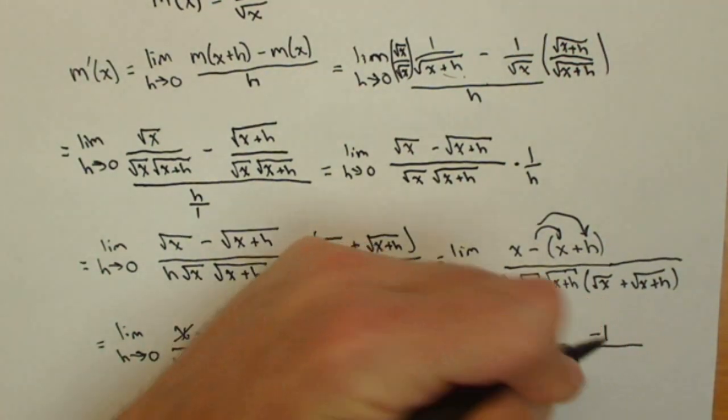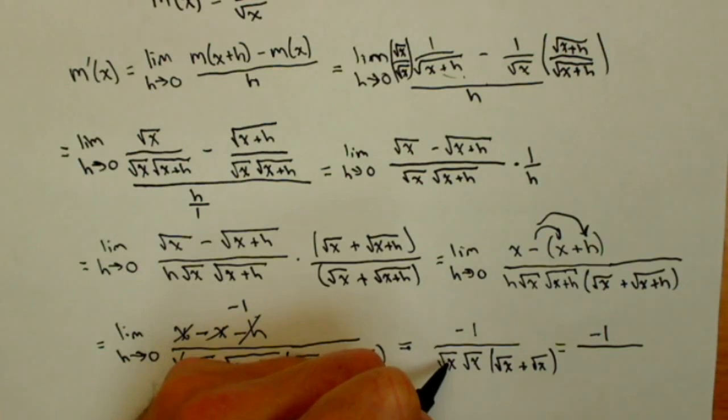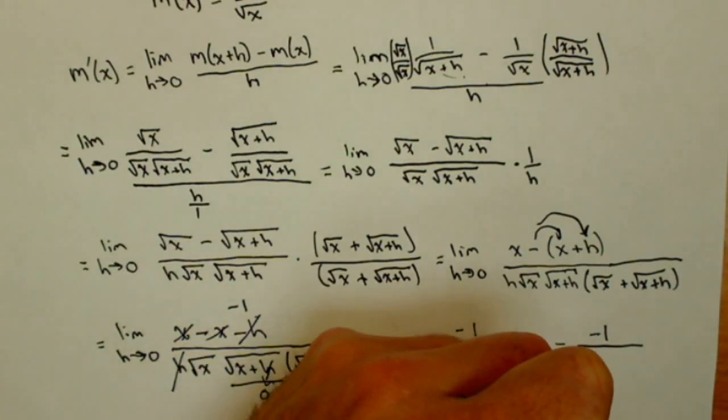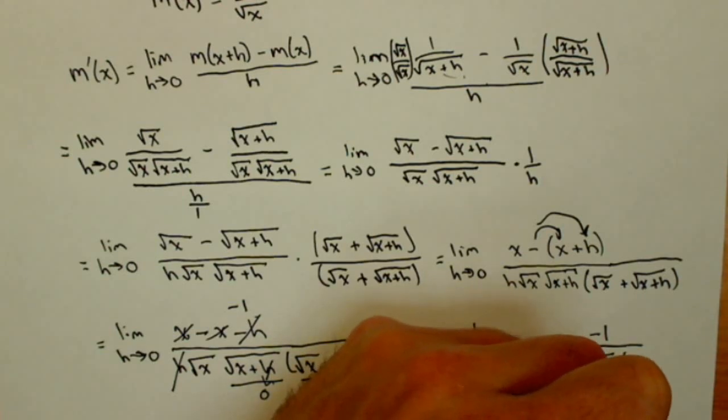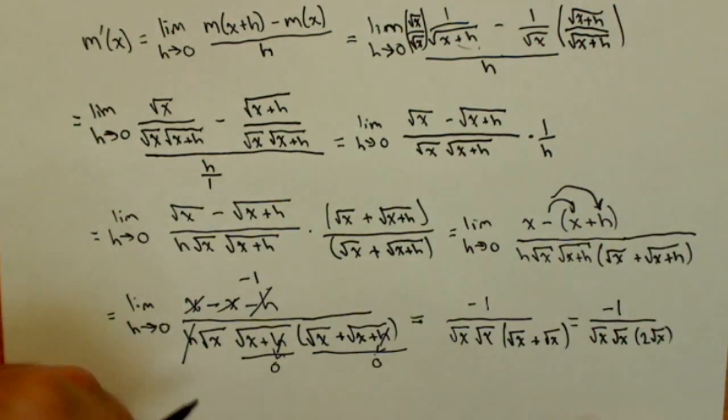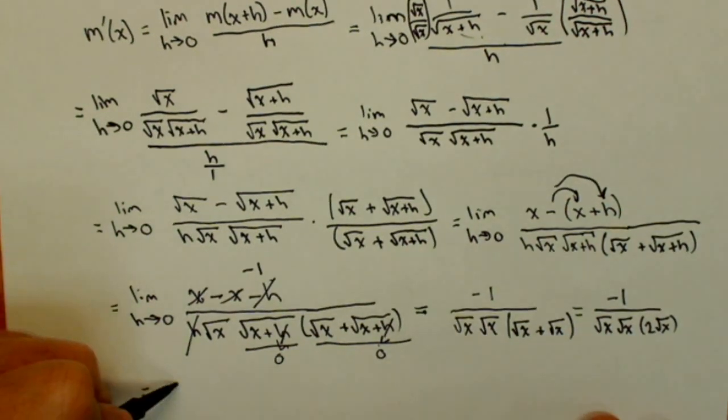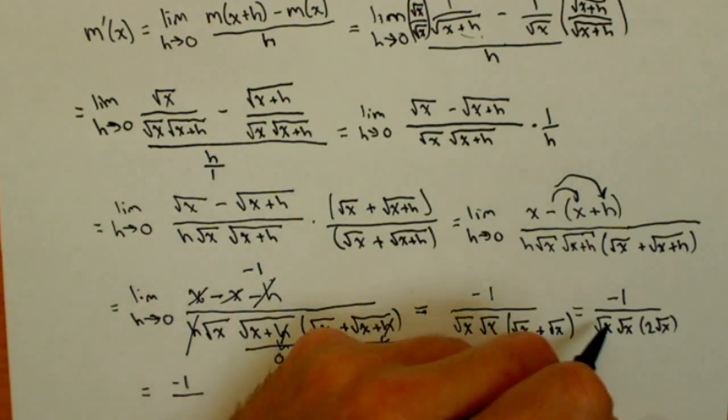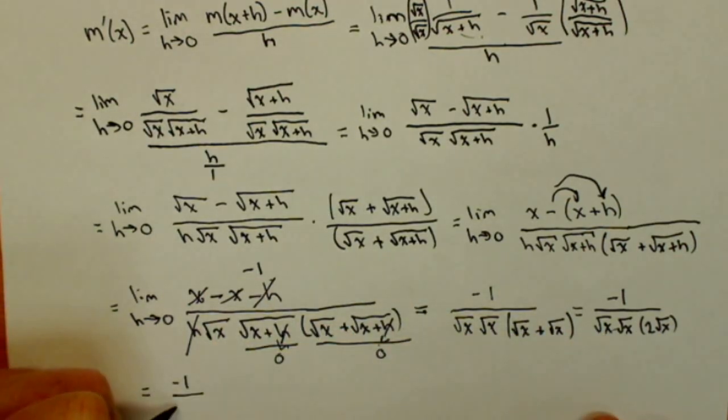So we have negative 1 over square root of x times square root of x times 2 square roots of x. There's a couple different ways we can write out this final answer, depending on what you like. We're going to have negative 1 over, the square root of x times square root of x is going to be x. So we could write it as 2x square root of x.